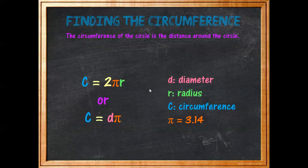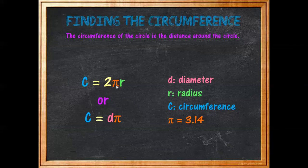The circumference of the circle is the distance around the circle. The formula is circumference equals two times pi times the radius, or diameter times pi. If you think about it, two times the radius equals the diameter, so that's why either formula works.